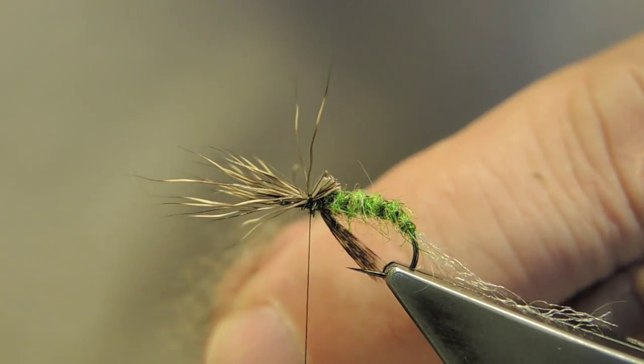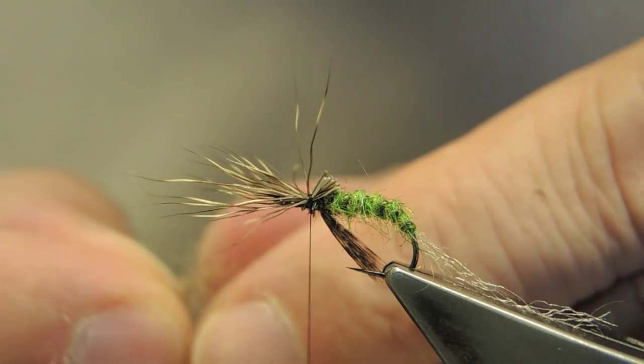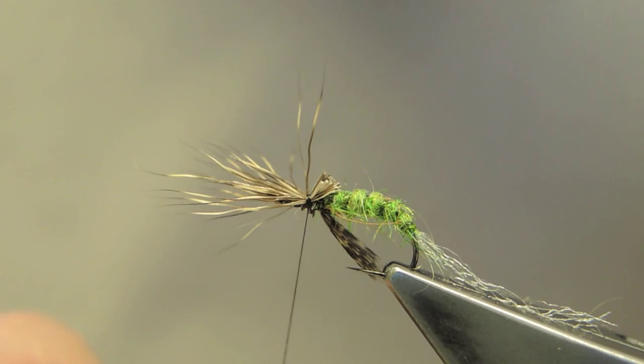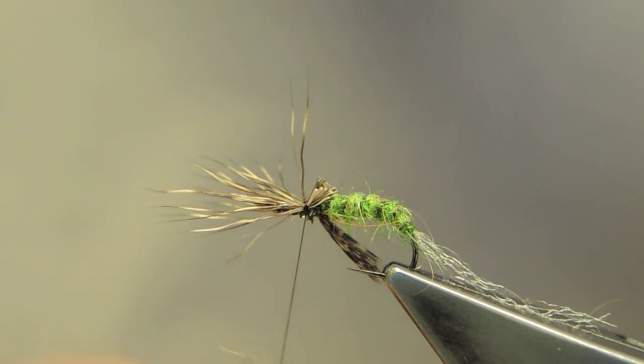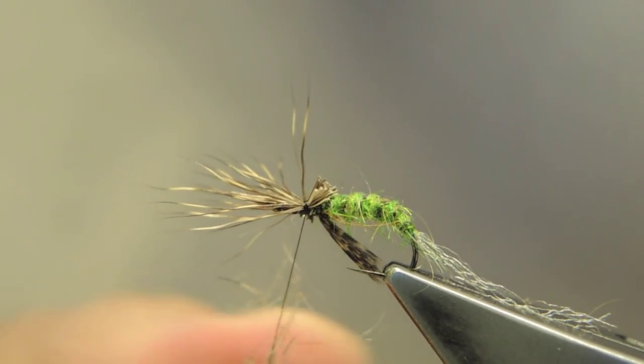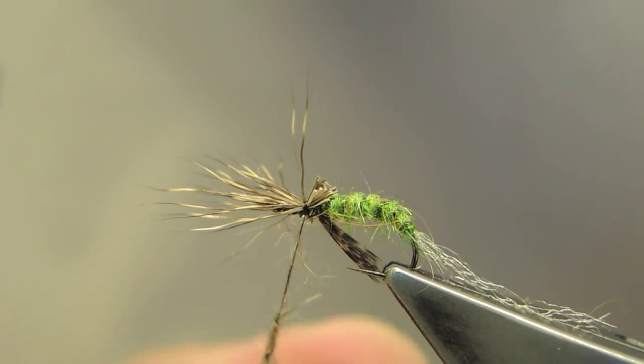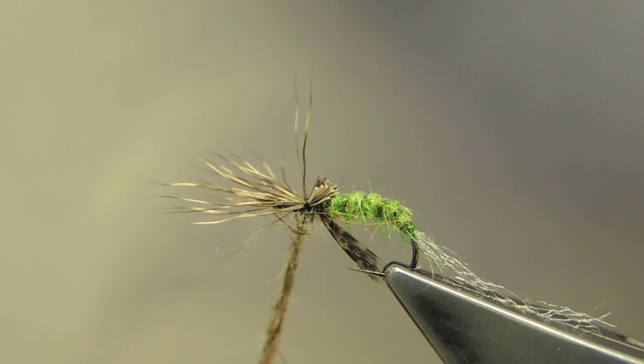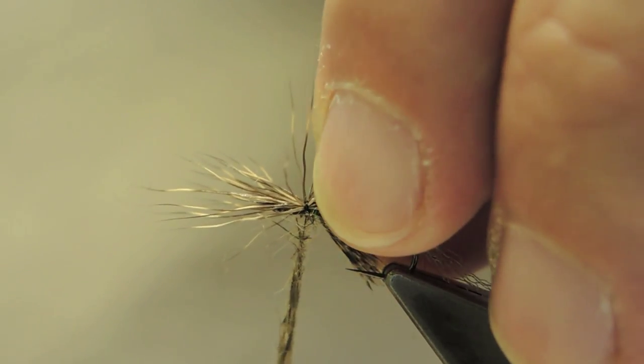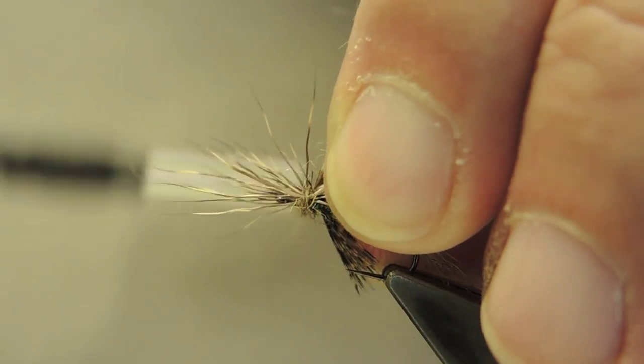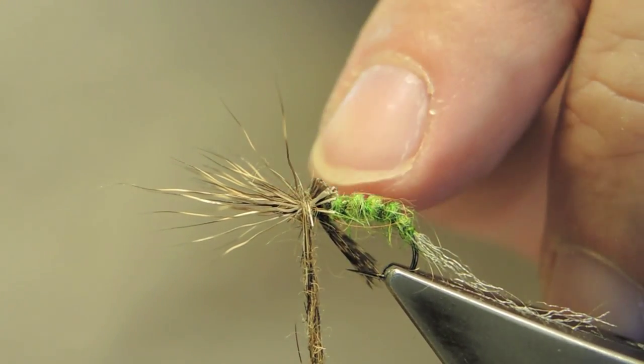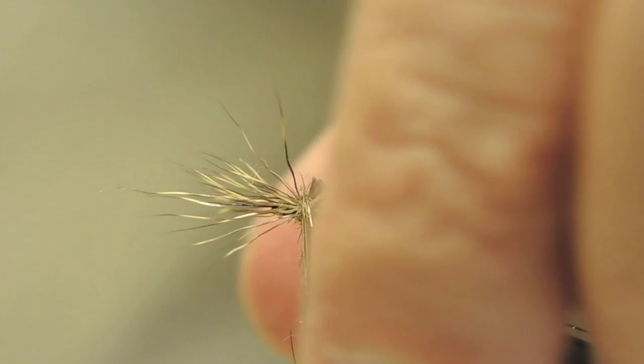The thorax or the head, some dark coarse dubbing. I'm using squirrel. Hare's Ear would be a good alternative. Making one, two turns behind the wing and in front of the shoulder.